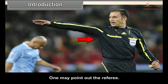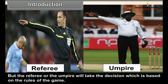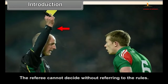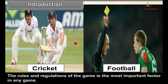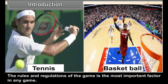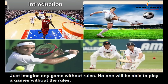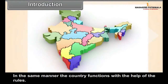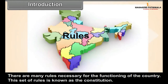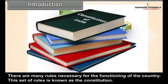One may point out the referee. But the referee or the umpire will take a decision based on the rules of the game. The referee cannot decide without referring to the rules. The rules and regulations of the game are the most important factor in any game. Just imagine any game without rules — no one will be able to play without rules. In the same manner, the country functions with the help of rules. There are many rules necessary for the functioning of the country. This set of rules is known as the constitution.